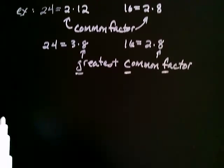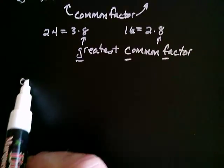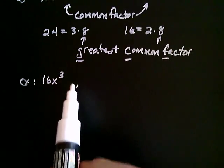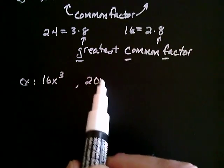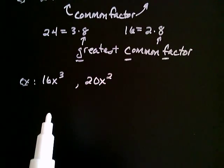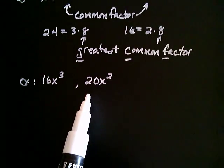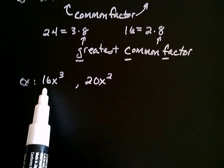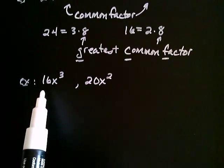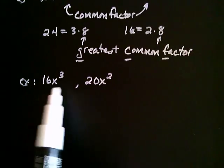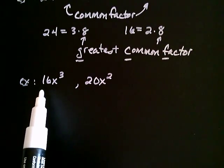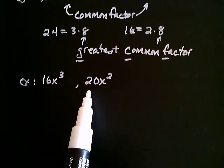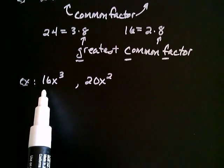Now consider the following two expressions: 16x to the third and 20x squared. Let's think about the greatest common factor of these two expressions. Imagine that these expressions could talk to each other, and first they could focus on their coefficients. The 16 would say, 'I have a factor of 4,' and the 20 would say, 'I have a factor of 4 as well.' That is the numerical part of our greatest common factor, because there's no larger number that goes into both 16 and 20.